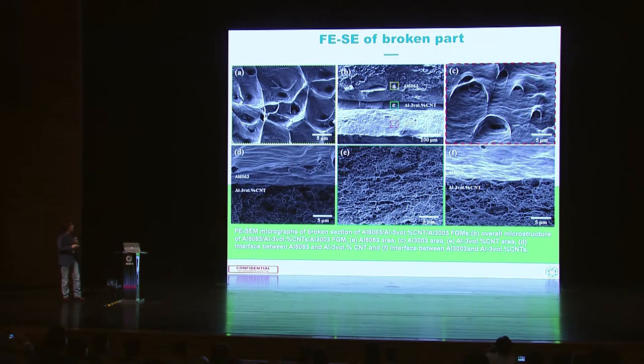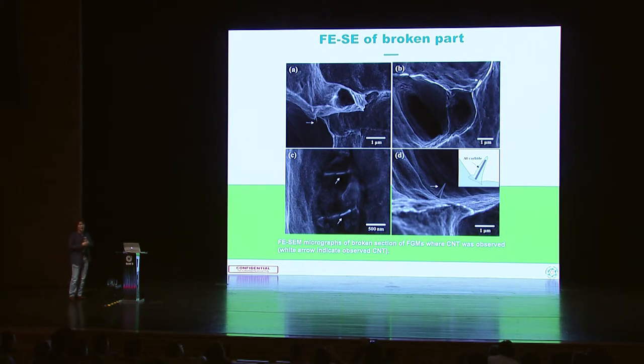Looking again at the inside microstructure, we found no serious large cracks or significant damage after breakdown. However, we found a very interesting area — it may be CNT, and aluminum carbide covered it a little bit. Based on my previous research already published in an international journal, I investigated this part. Aluminum carbide formed only on the outside, while inside the carbon nanotubes are still surviving. So many complex microstructures formed.